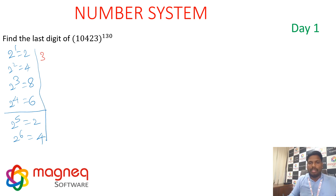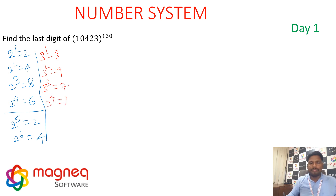For digit 3: 3¹ ends in 3, 3² ends in 9, 3³ ends in 7, 3⁴ ends in 1, 3⁵ ends in 3 — repetition after 4 powers.